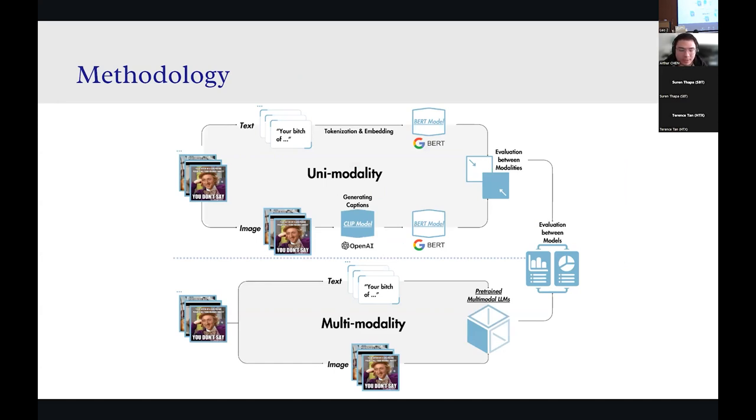Now for the image modality, things become a little bit more tricky as there's a natural gap between how the model handles the information from different modalities. If we want to compare the results from different modalities in a fair manner, we want to rule out that gap as much as possible. The method that we use here is that we use a pre-trained CLIP model to generate descriptive captions and then feed the captions into the BERT model the same way as we did with the textual modalities.